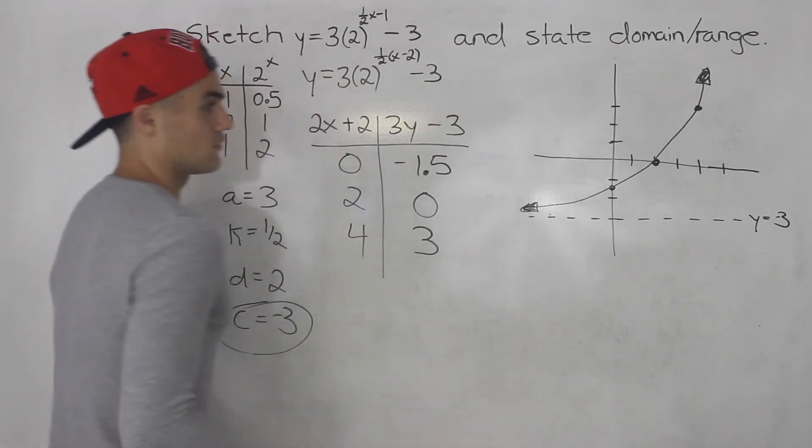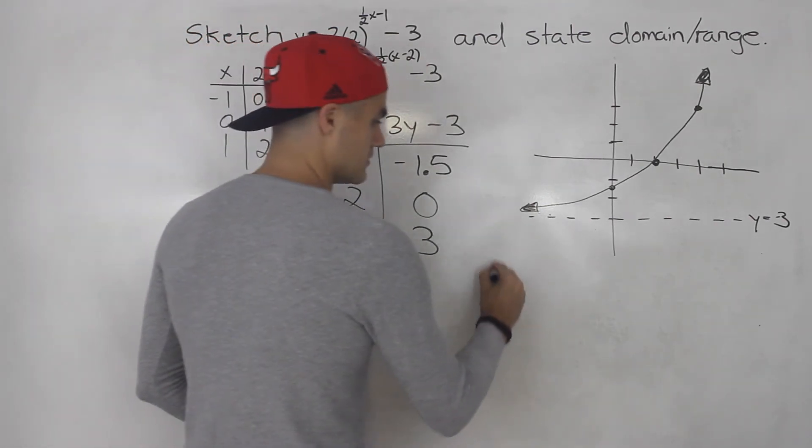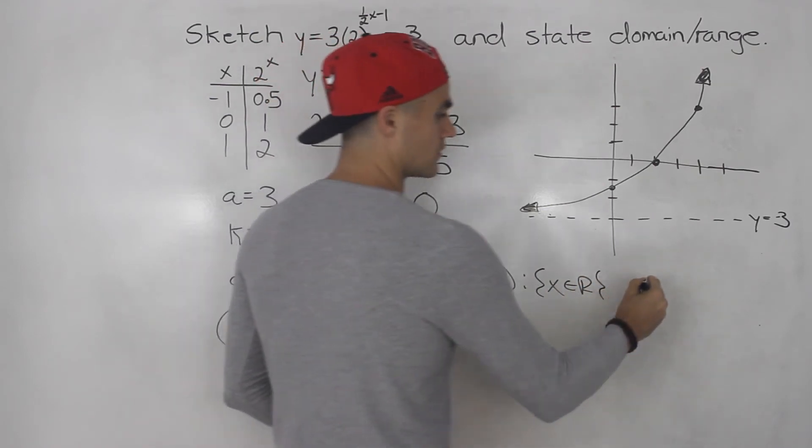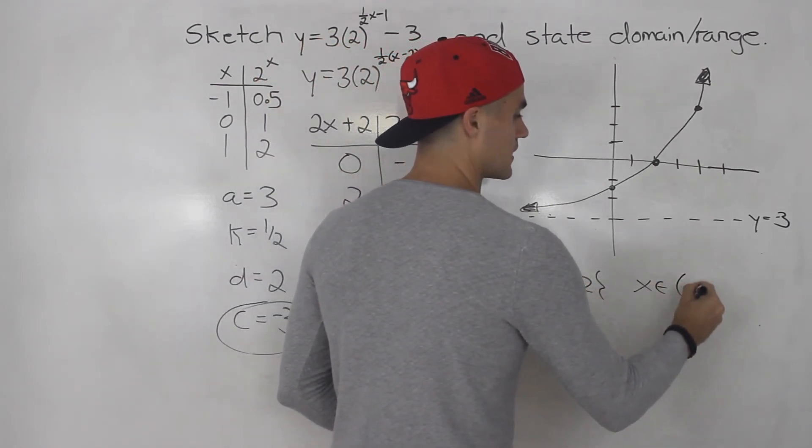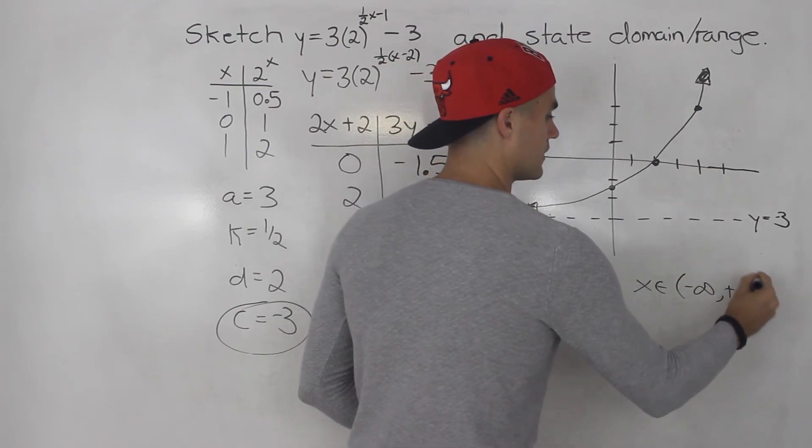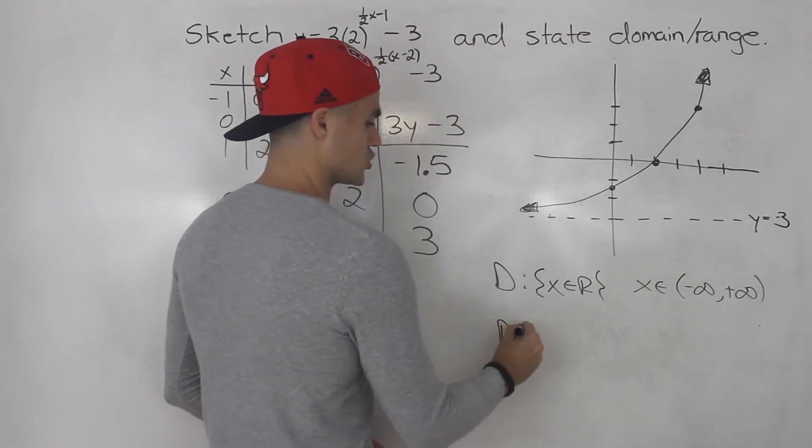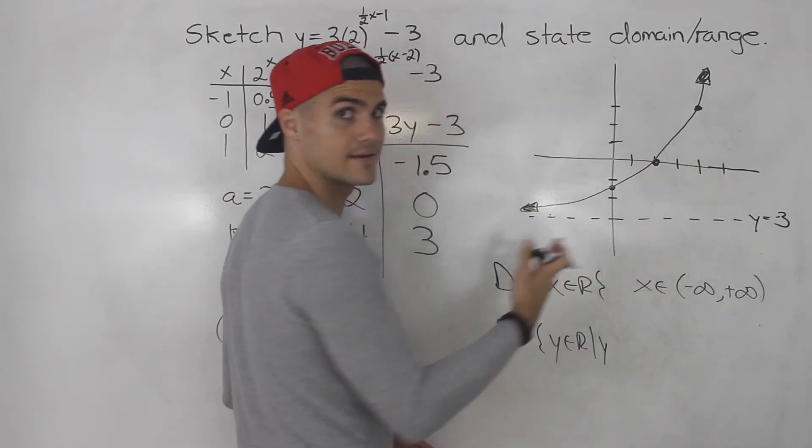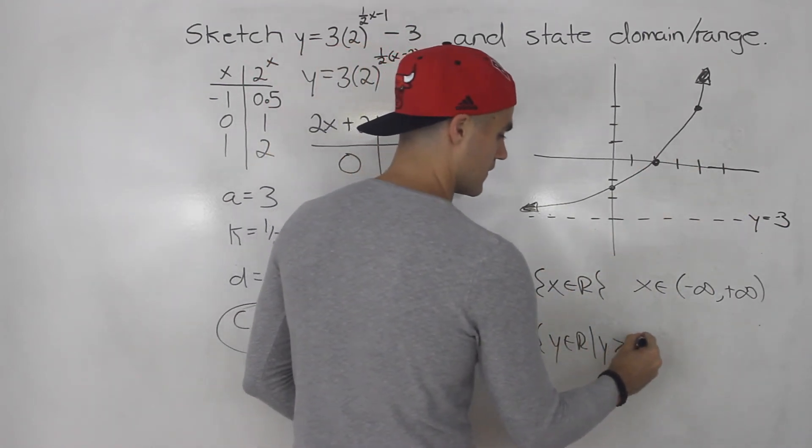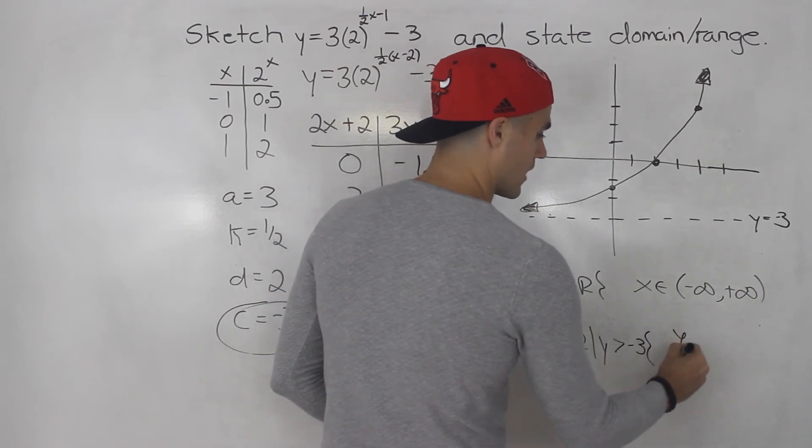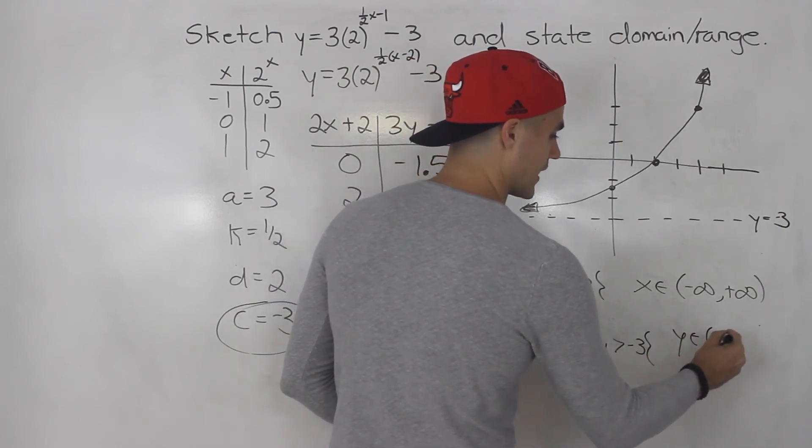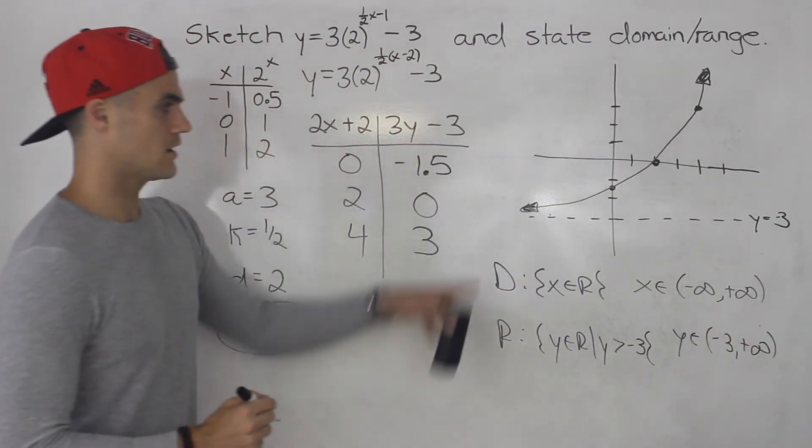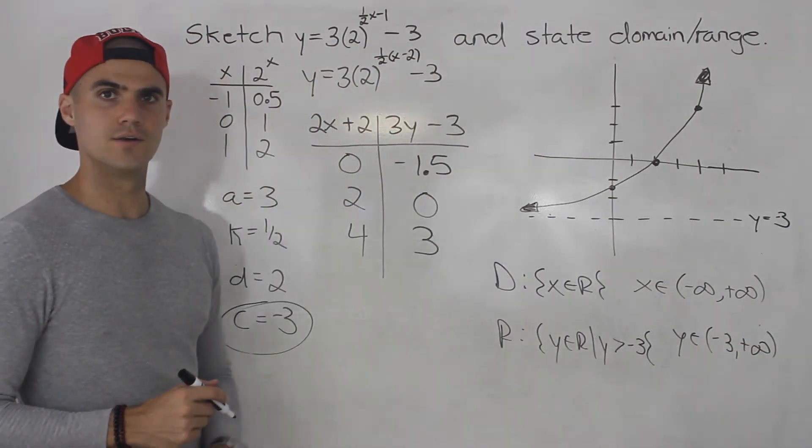Okay. So from here, domain, x is an element of real numbers. Or in set notation, x is an element between negative infinity and positive infinity. Range, y is an element of real numbers, but y has to be greater than negative 3. So y would be an element from negative 3 to positive infinity. Graph, domain, and range.